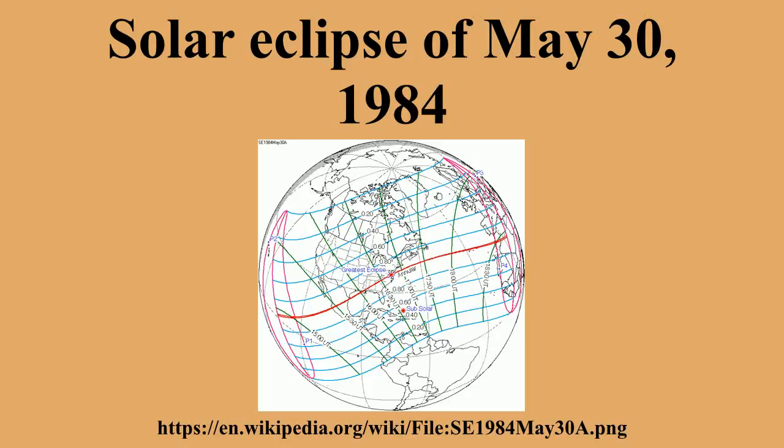An annular solar eclipse occurred on May 30, 1984. A solar eclipse occurs when the Moon passes between Earth and the Sun, thereby totally or partly obscuring the image of the Sun for a viewer on Earth.